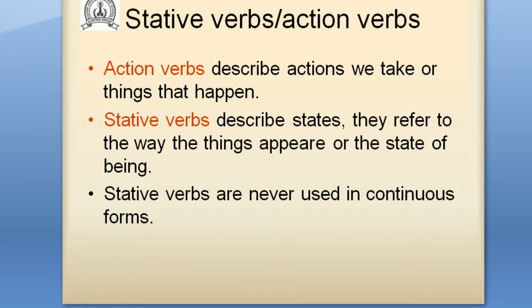Stative verbs are the opposite of action verbs. Action verbs describe actions we take or things that happen. But stative verbs describe states. They refer to the way things appear or the state of being. Stative verbs are never used in continuous forms like present continuous, past continuous, present perfect continuous, and so on.